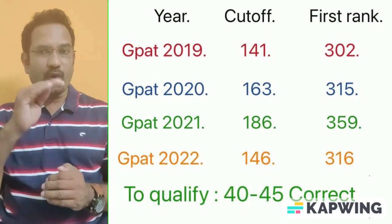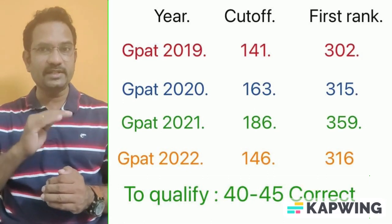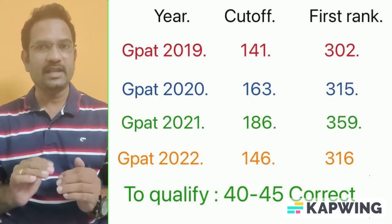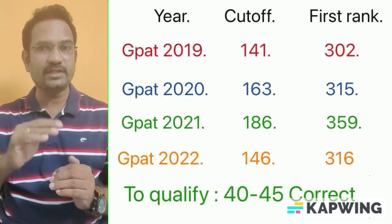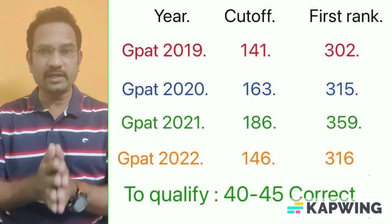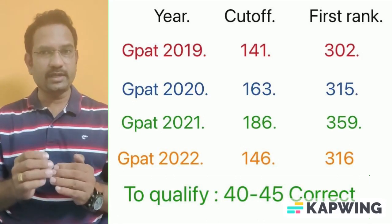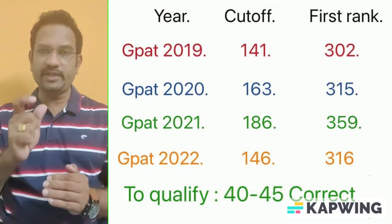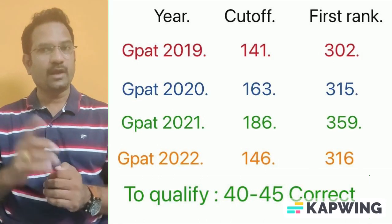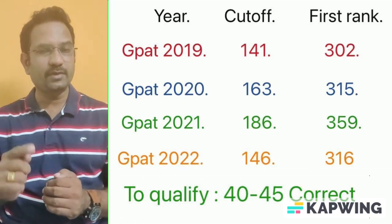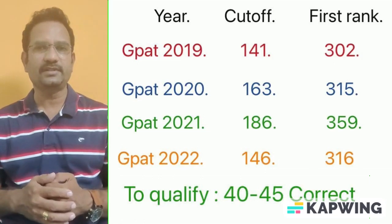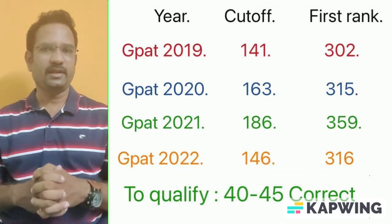All through the years, the qualifying percentage is only 9.3 to 9.6 percent — less than 10 percent of students are getting qualified in the GPAT examination. In 2022, around 50,000 students wrote the GPAT examination, and out of 50,000, only 4,600 got qualified, which is only 9.6 percent.